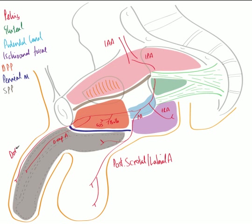The terminal branch of the internal pudendal artery is the dorsal artery. This passes between the perineal membrane and the pubic symphysis to run along the dorsal surface of the penis, supplying the skin and surrounding tissue — or, in the female, it would be the dorsal artery of the clitoris.